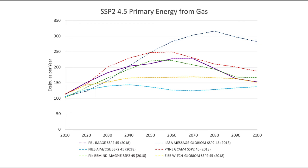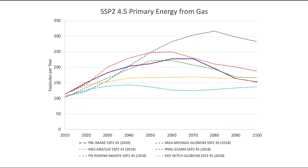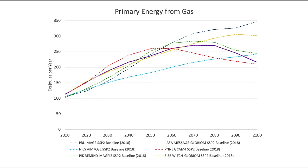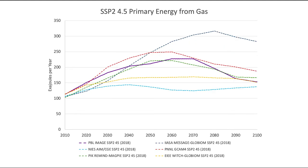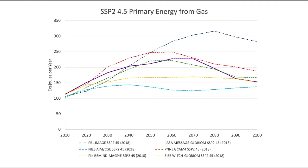How would a financial institution do, particularly if it's invested in gas? You could compare: there's the baseline, and then this is the kind of future you could see with a 4.5 or 2.6 degree Celsius scenario. The key thing to notice is that in all these scenarios, exajoules per year from gas goes down relative to what it would have been otherwise.